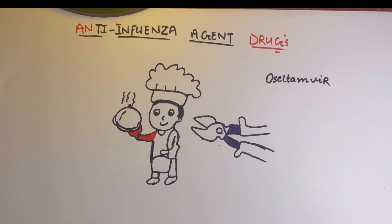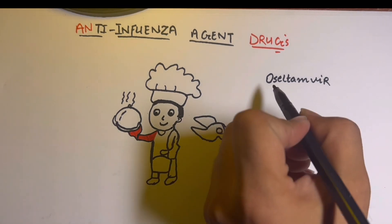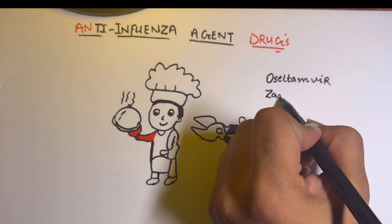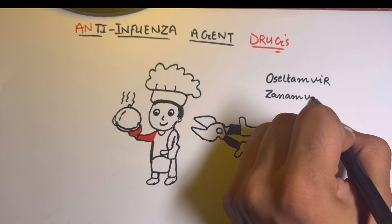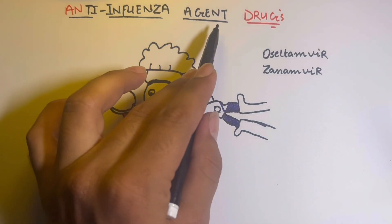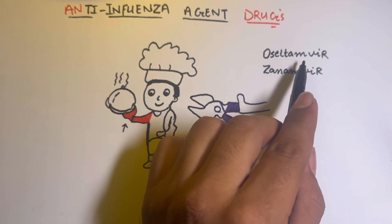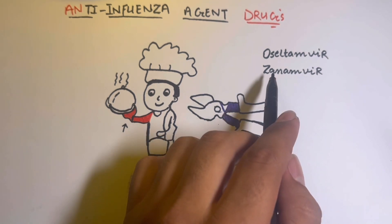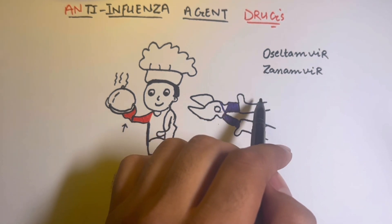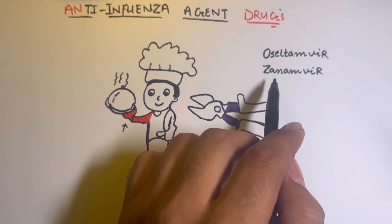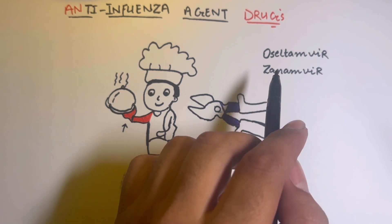We'll discuss anti-influenza agents. There are two main drugs: oseltamivir and zanamivir. I will discuss the function of these drugs and provide the best mnemonics for remembering them for a long time.